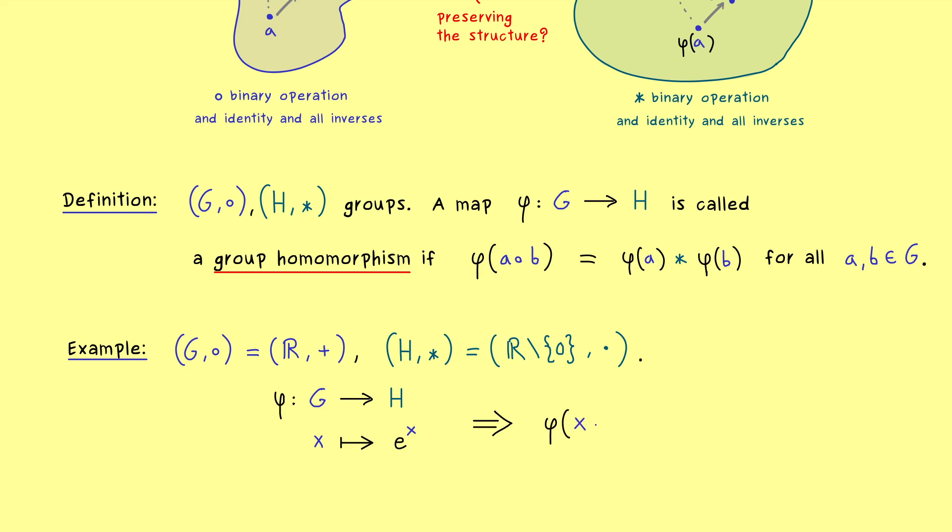And there we can simply check if the group homomorphism property is satisfied. So let's say we take two elements x and y and combine them with the binary operation in G, which simply means that we add the numbers. And then the outcome with φ is simply e to the power x plus y. So this is the left hand side here, which means we can also look at the right hand side and then compare it. Indeed, the right hand side means that we have to use the binary operation in H, so we have the multiplication here. So what we have is e to the power x times e to the power y.